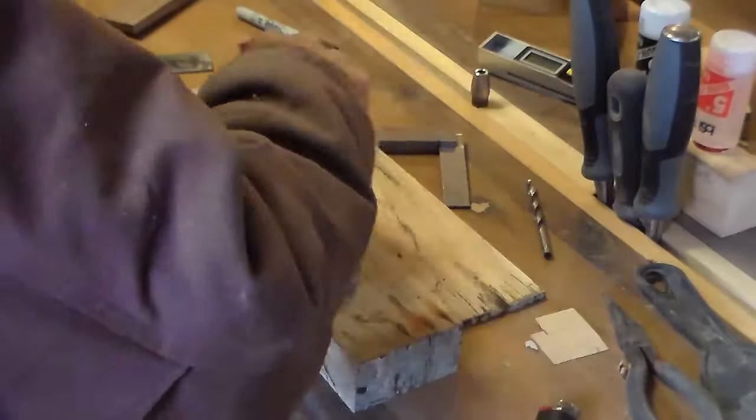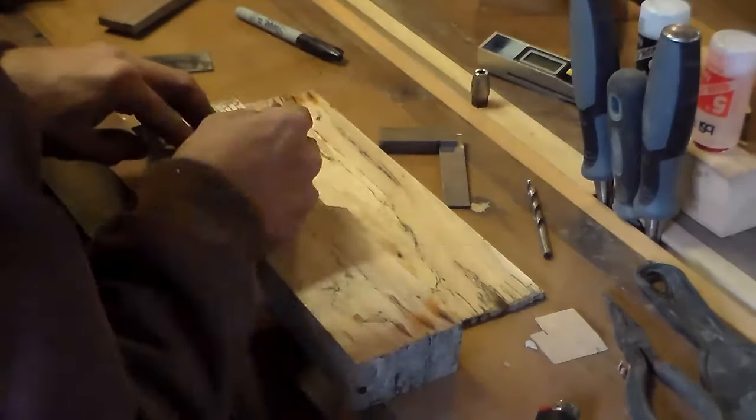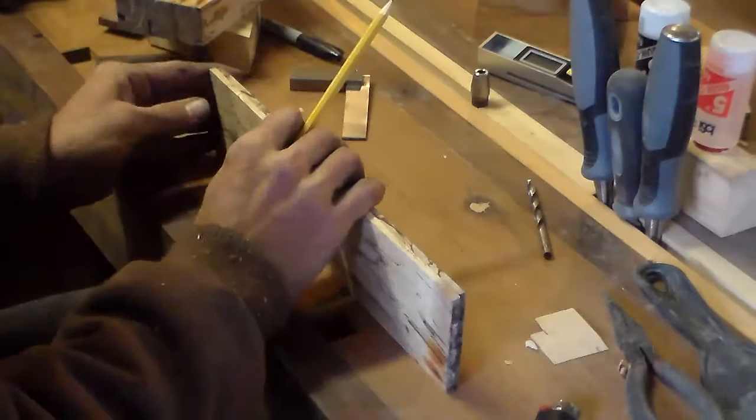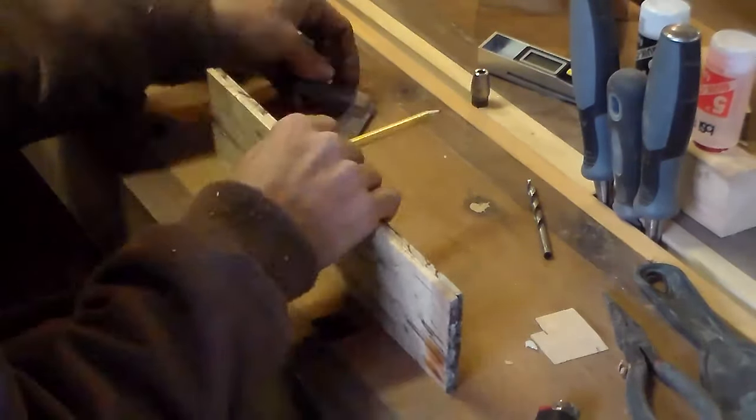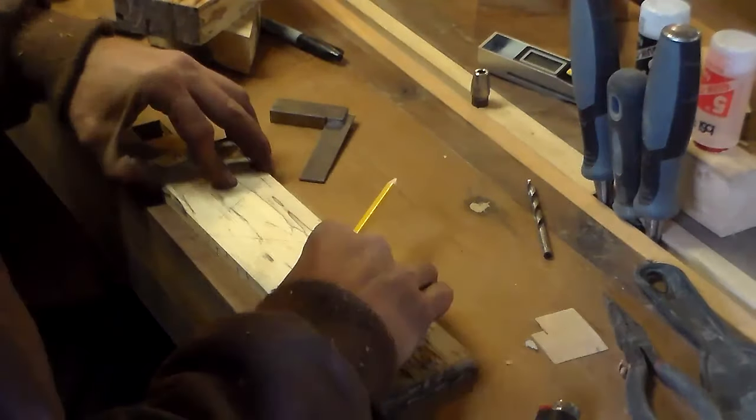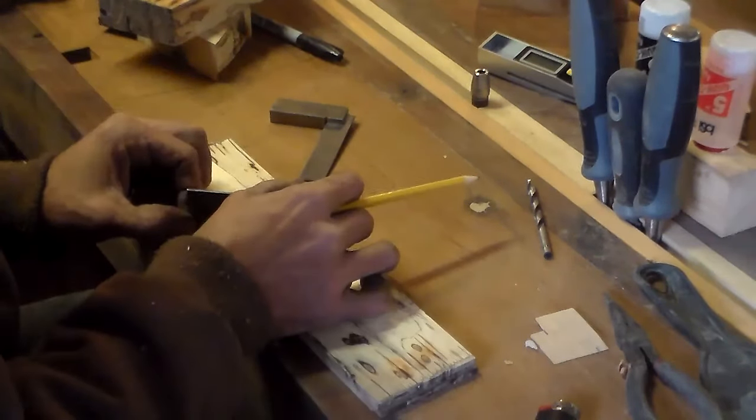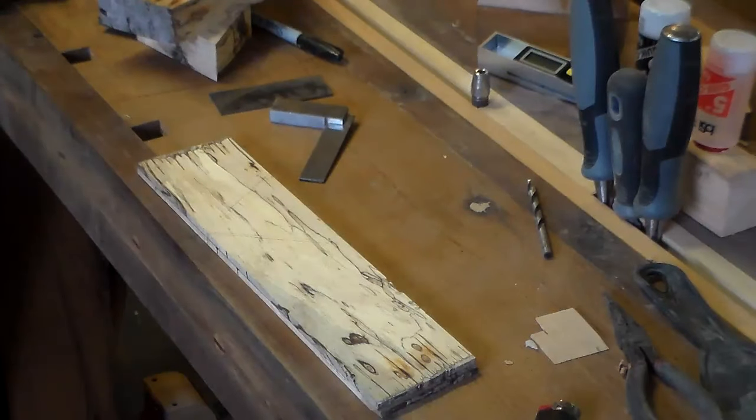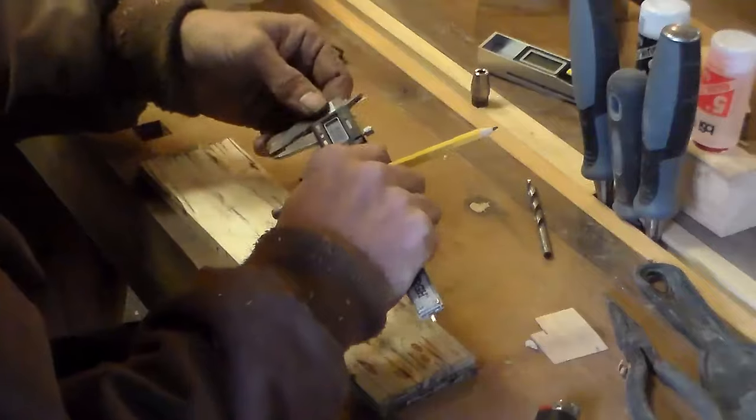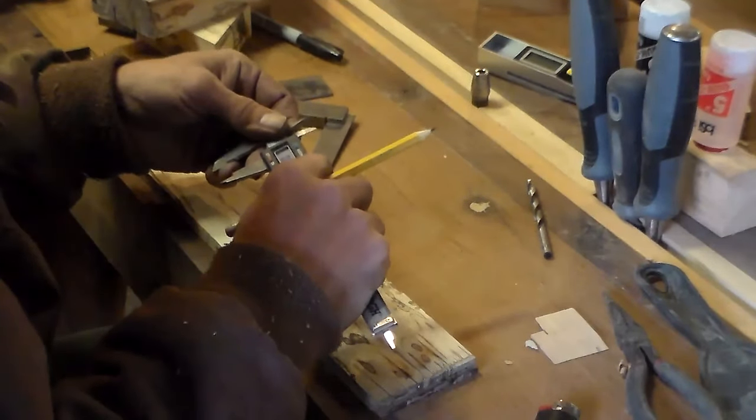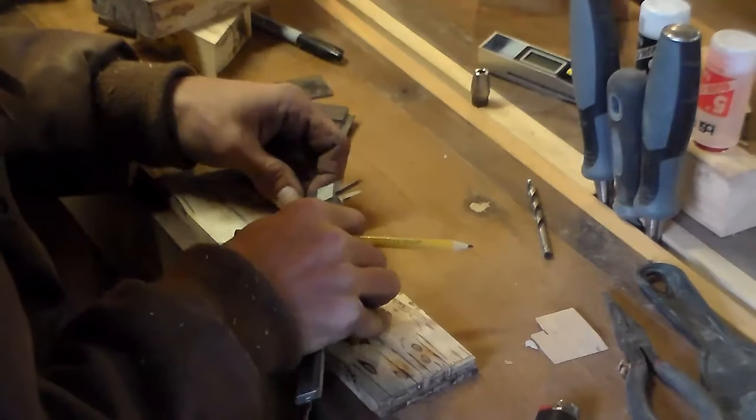Got everything marked out, transferred the angles to the sides here, and then marked where I wanted the pin that goes across and holds the iron down, that the wedge goes under. Then took it over to the drill press and drilled a three-eighths hole.